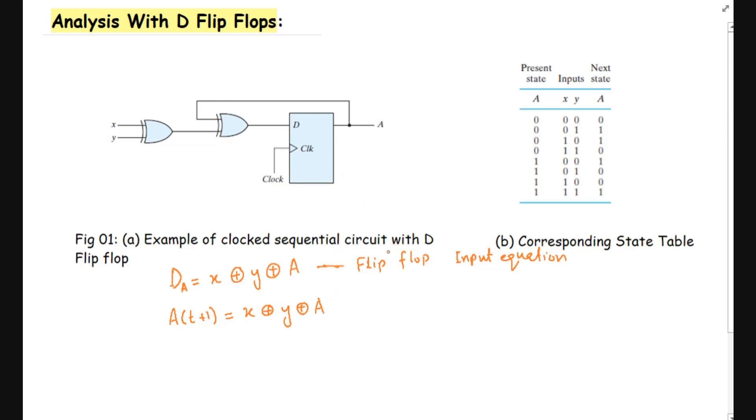Now, you can see that the flip-flop input equation and the state equation are both same, because in D type of flip-flop whatever value available here is totally transferred to the output A or to the next state. That is why these two equations are same. If we are using other type of flip-flops, these two equations will not be the same.